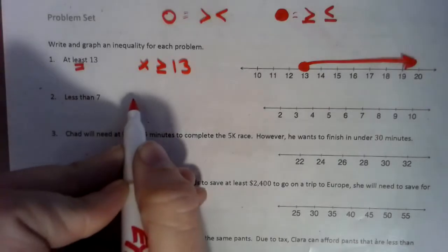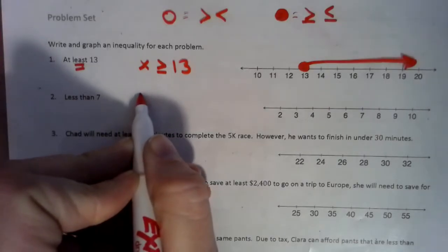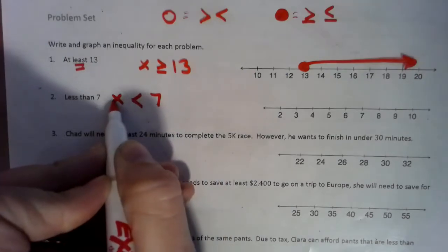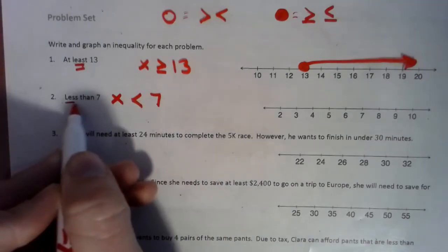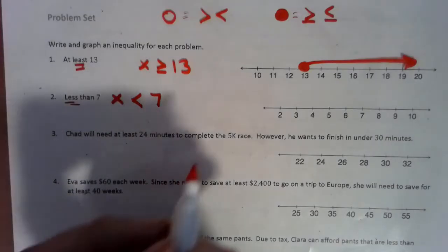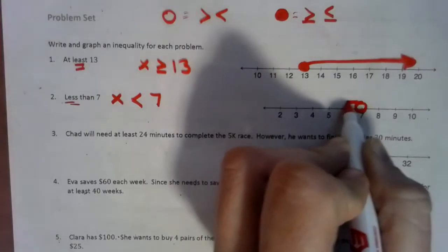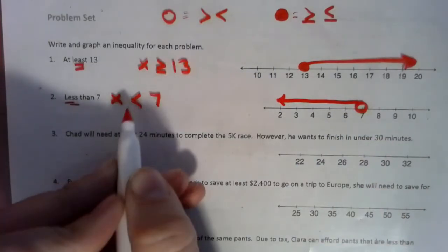Less than 7. So we have any number that is less than 7. So we put our variable in front. So we need numbers less than 7. So it doesn't include it. It has to be less than. So we're going to use an open circle on the 7, and our arrow shoots to all numbers that are less than 7.